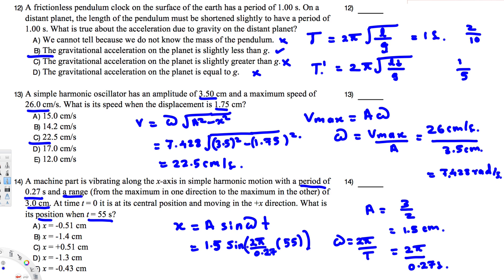Setting your calculator to radians mode and plugging in all values gives −1.437 centimeters. So the answer is the second option. That's how we solve this kind of problem — hope you found this video helpful, see you next time.